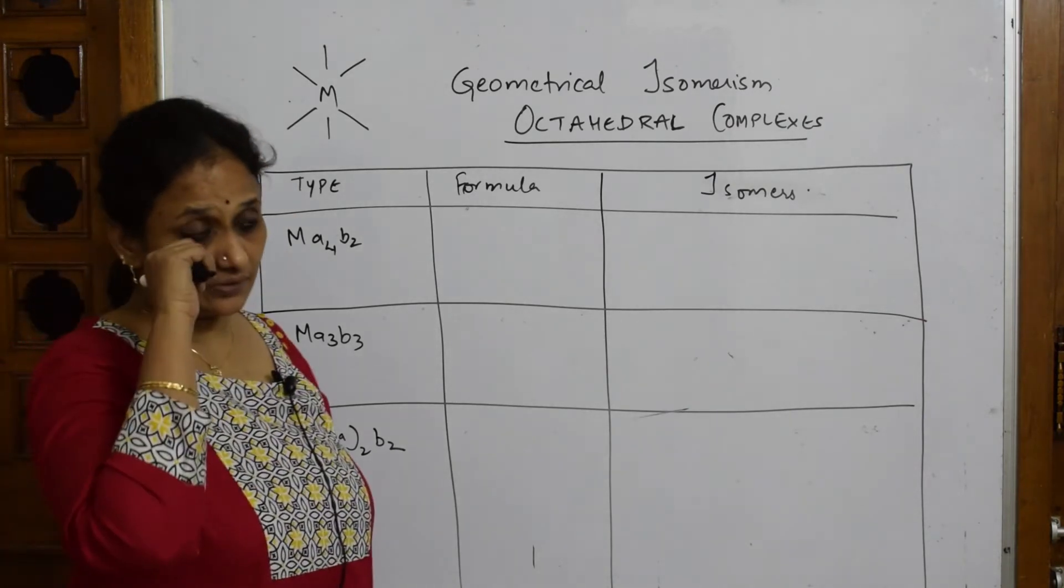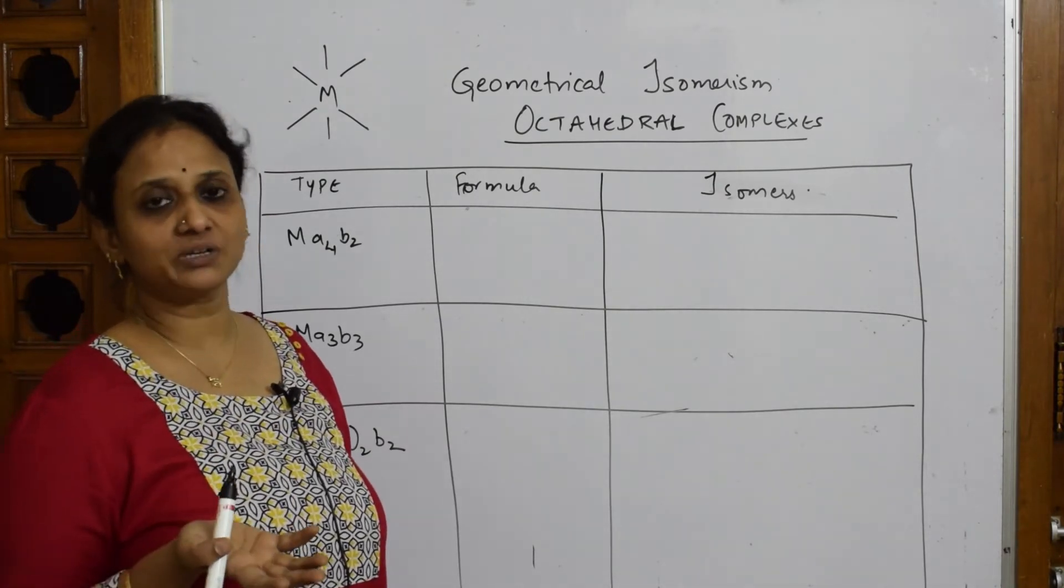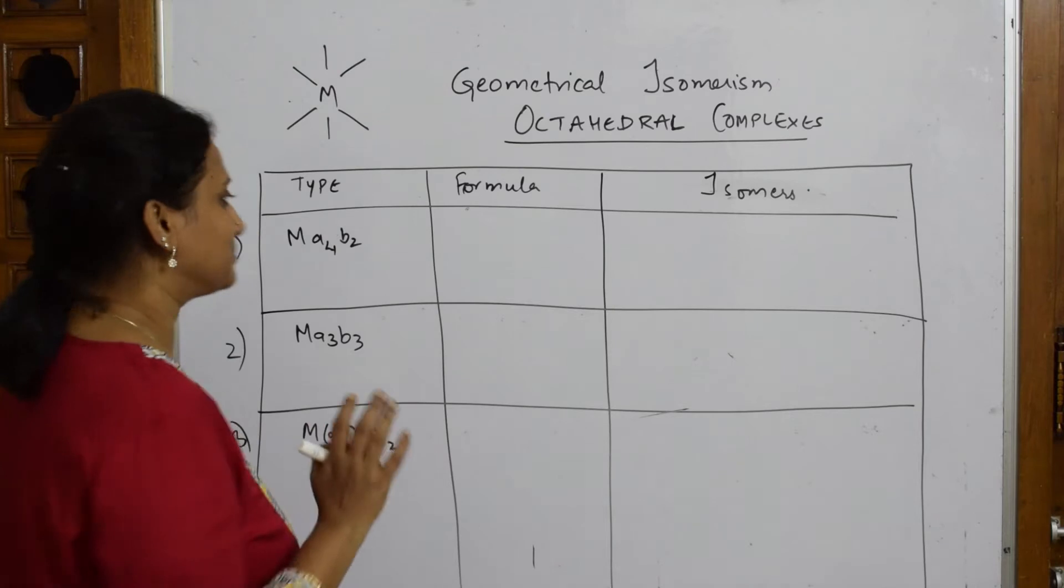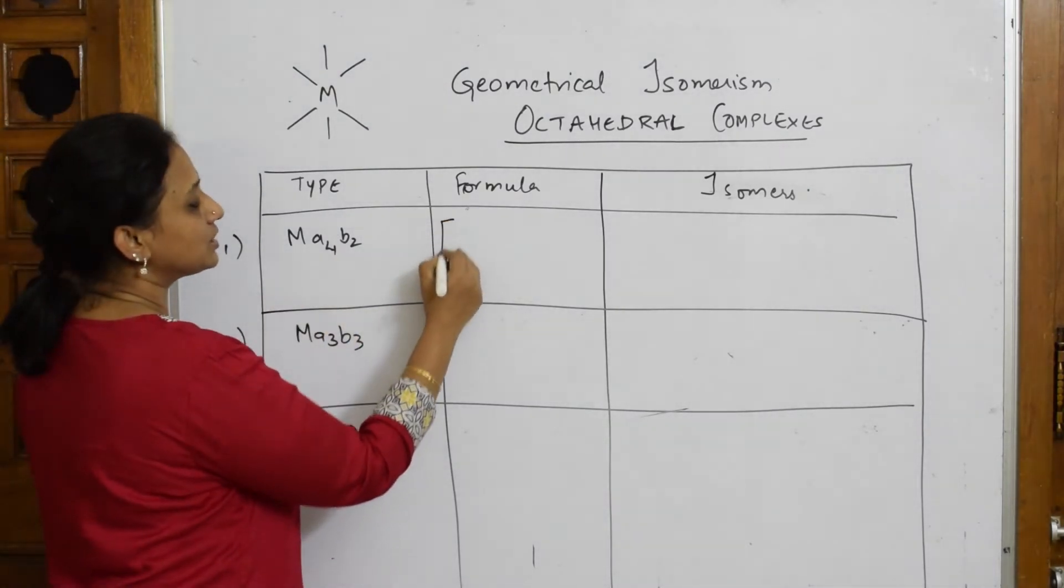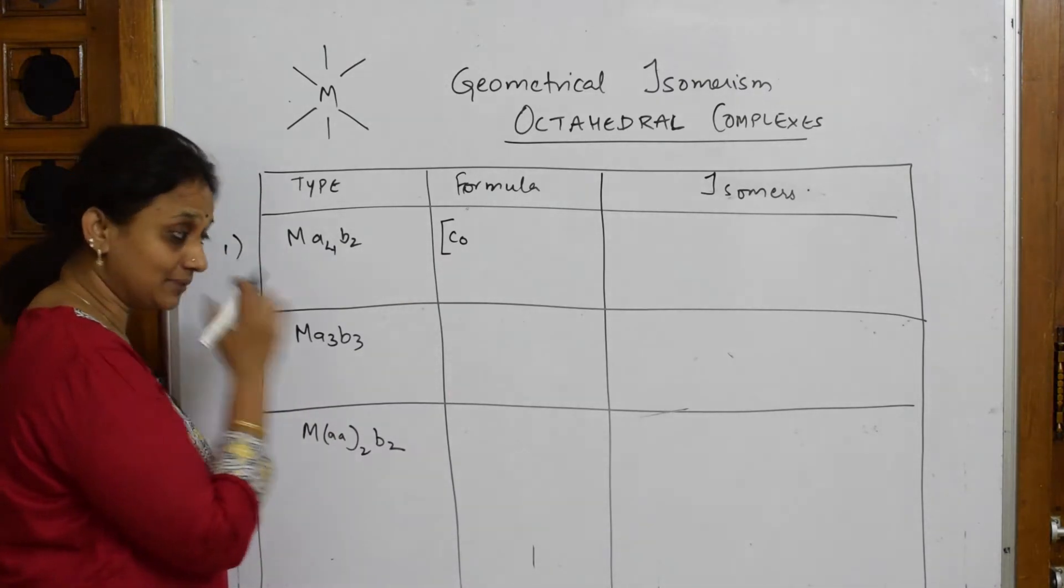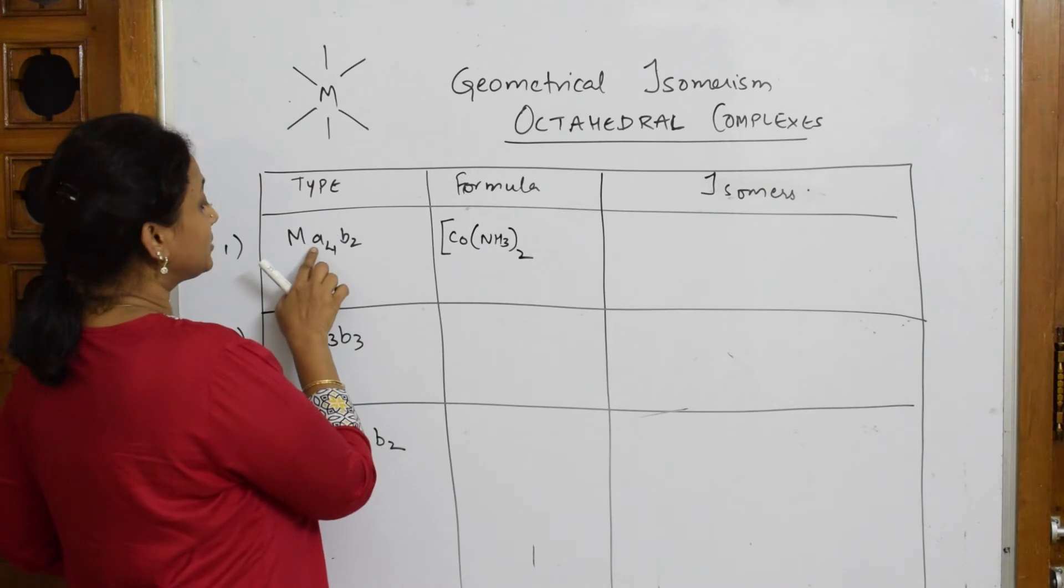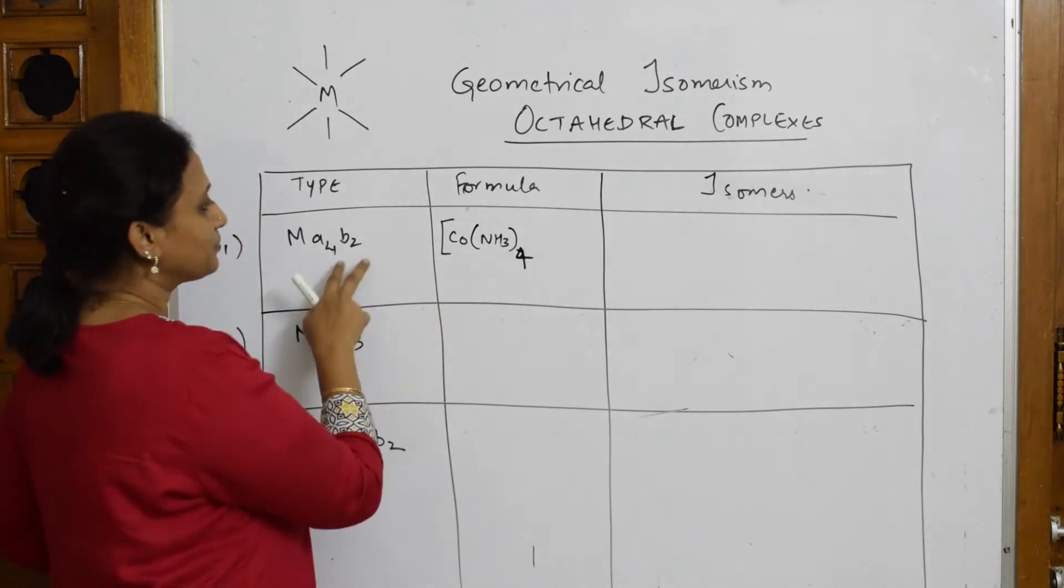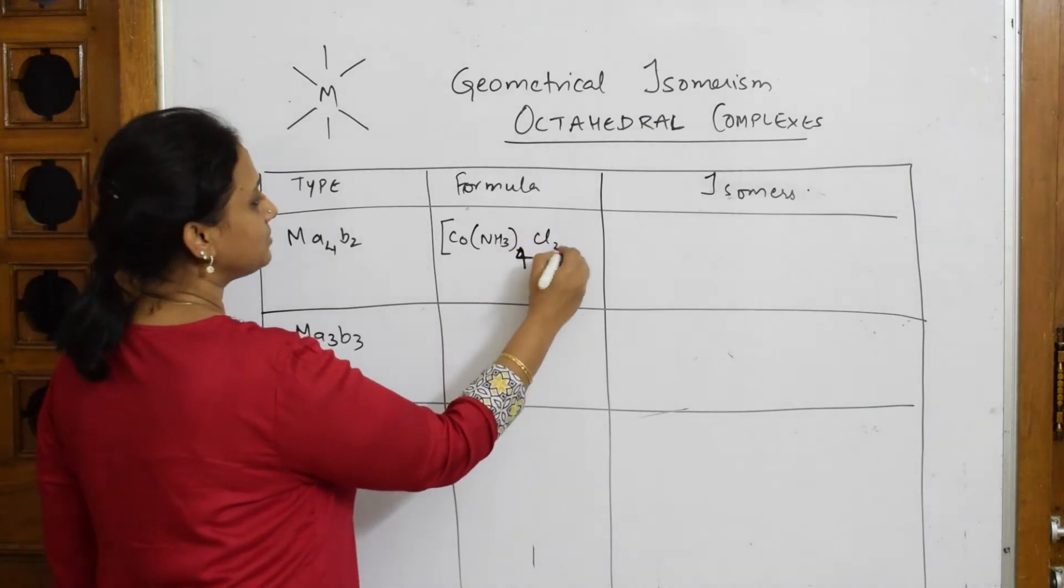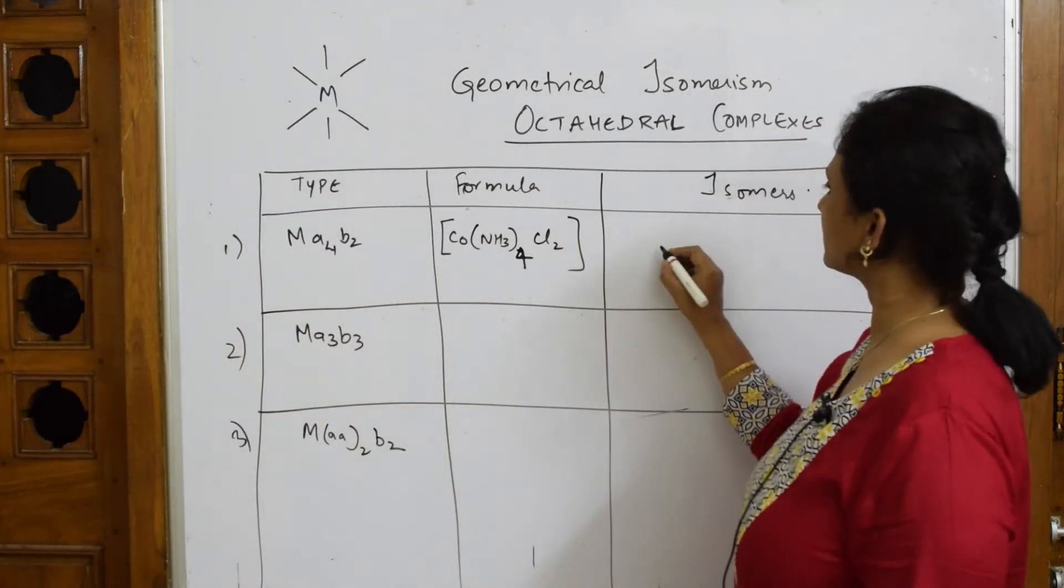So in the exam, how is it given? You'll be given an example and you're supposed to draw the isomeric form of that, right? So simple. Let me take one example, M, A4, B2. So a metal complex, cobalt. This is the simplest example. NH3 taken twice because they're given 4. So NH3 taken twice should be 4. Total is 6, isn't it? Right. Apart from that, B2 is Cl. Simple. Now let us draw the cis and trans isomer.